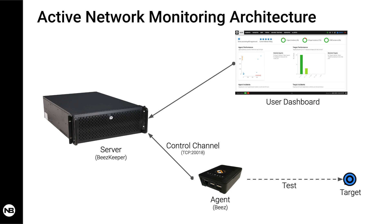SNMP, passive, and active monitoring all have a very important function in monitoring a distributed network. In summary: SNMP provides network device status and utilization; passive tells you how your network is used and consumed by your users; and active provides real-time, proactive, and continuous monitoring of your network performance and applications.